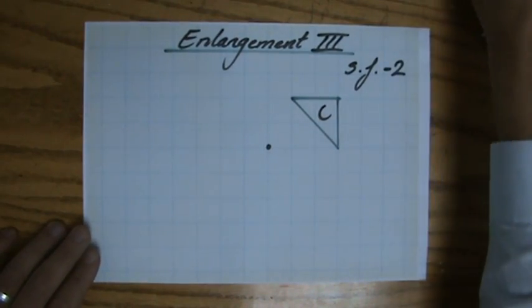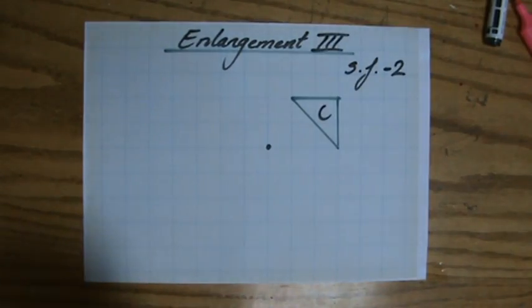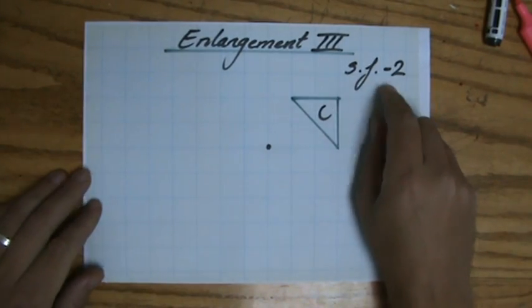We're doing enlargements, a type of transformation, and now the scale factor is going to be negative 2.